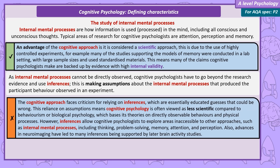This is the reason cognitive psychologists, despite their highly controlled lab studies, are not as scientific as behaviourists or biological psychologists, who support their theories with directly observable behaviours and physical processes. Despite this limitation, inferences are the only way to study internal mental processes, and many inferences made about internal mental processes like memory are supported by later studies, increasing our confidence in the validity of the original inference. This means cognitive psychology is able to study behaviour that cannot be studied by other approaches.